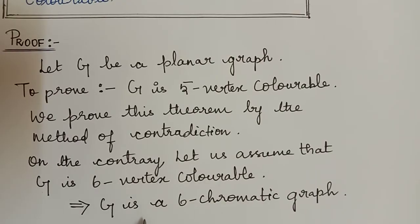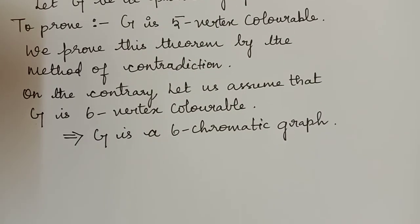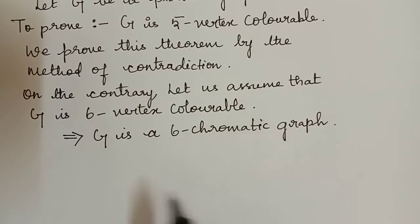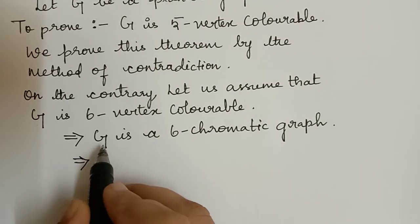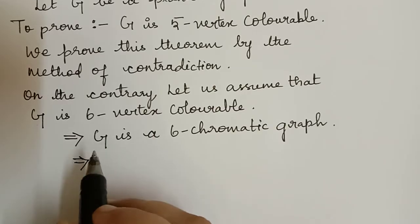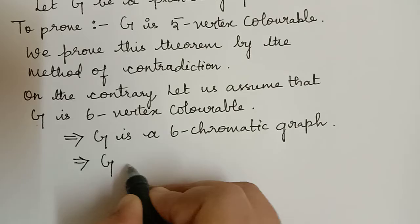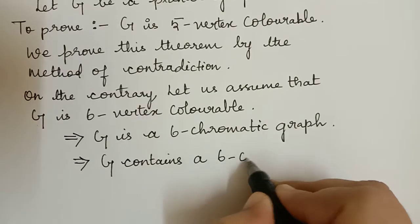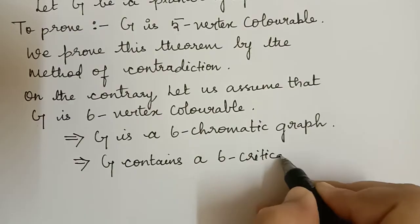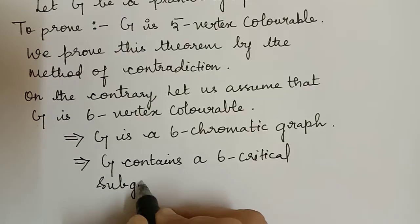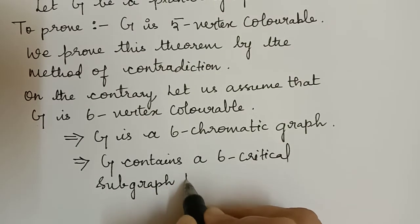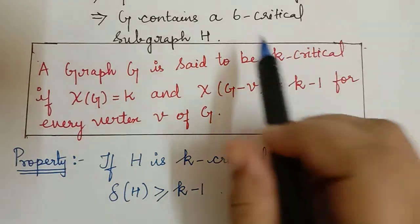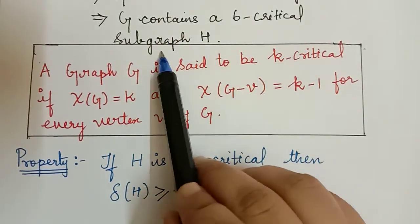We know that every k-chromatic graph contains a k-critical subgraph. Here, G is a six-chromatic graph, which implies G will contain a six-critical subgraph. Let us denote that subgraph as H. So G contains a six-critical subgraph H.